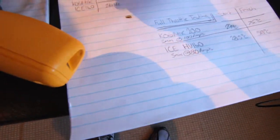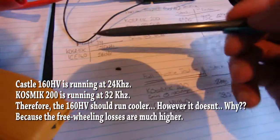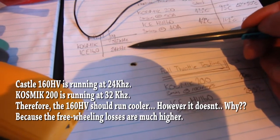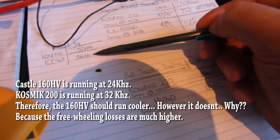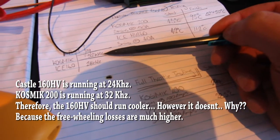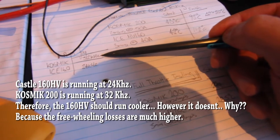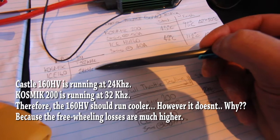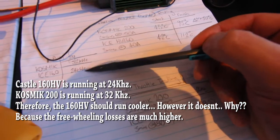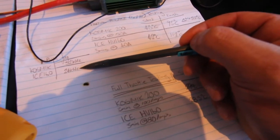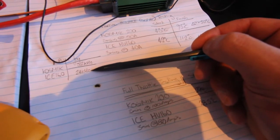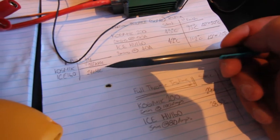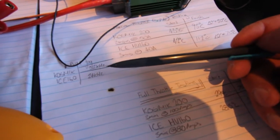Also keep in mind that the Cosmic was actually switching at 32 kilohertz, the HV160 was switching at 24 kilohertz so theoretically the Cosmic should have more switching losses, in which it does, however the HV160 has much more freewheeling losses. So if the HV160 was also switching at 32 kilohertz it could have finished up at around 120 or 125 degrees celsius.